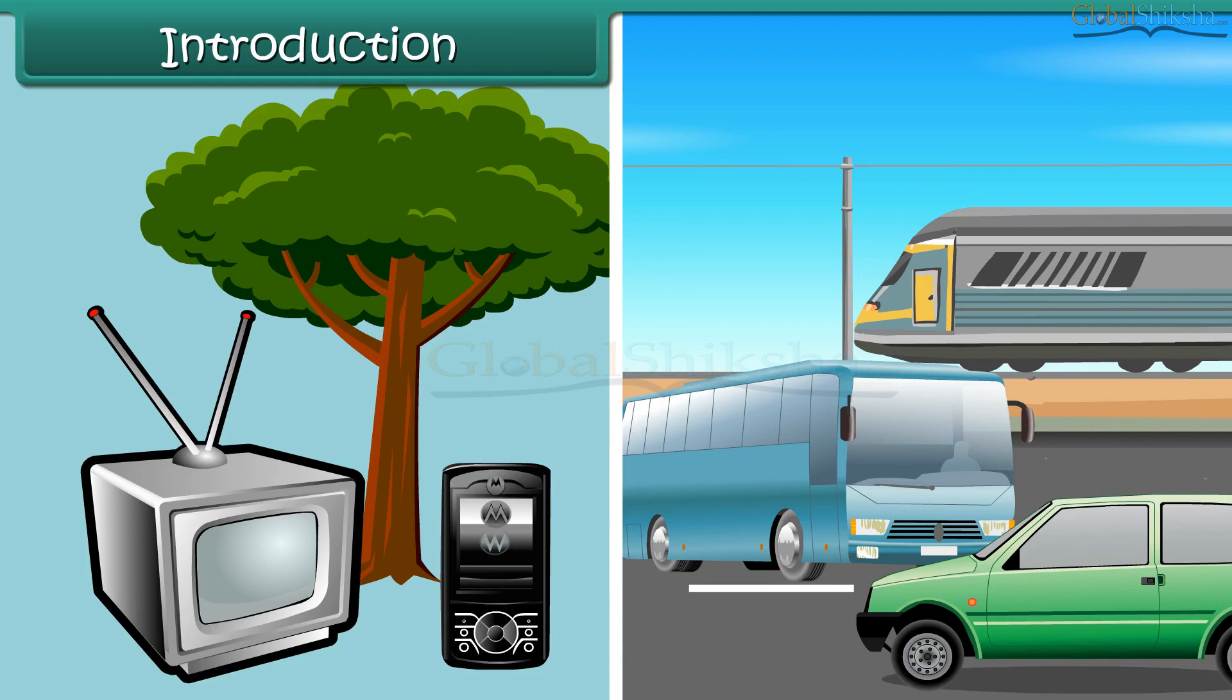Objects such as television, mobile, trees, etc. are static. In other words, their position does not change with time. Such objects are said to be at rest.